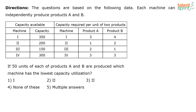Look at the first question: if 50 units of each of products A and B are produced, which machine has the lowest capacity utilization? Capacity utilization means how much capacity of the machine do I require to produce these goods. If you are looking at machine one, 50 units of each of A and B is produced.